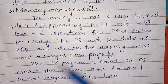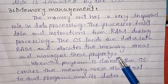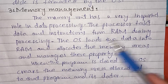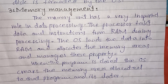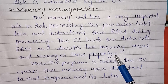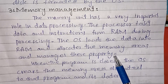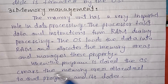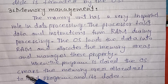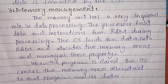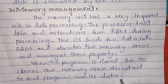The operating system manages data properly in RAM, tracking which data is in storage and which is in RAM, managing each item in its correct address. When the program is closed, the operating system clears the memory area allocated to that program and its data.